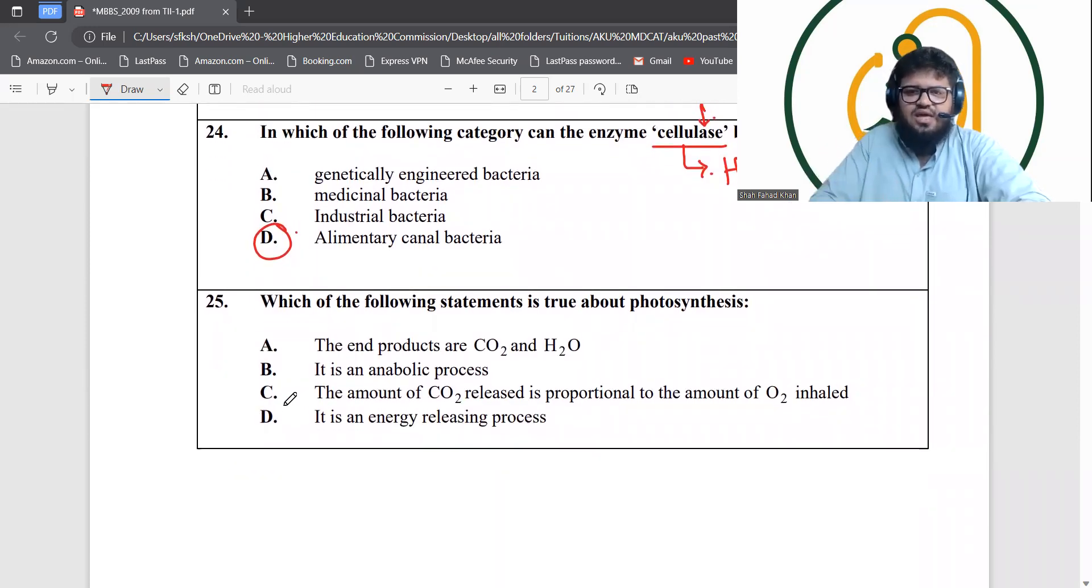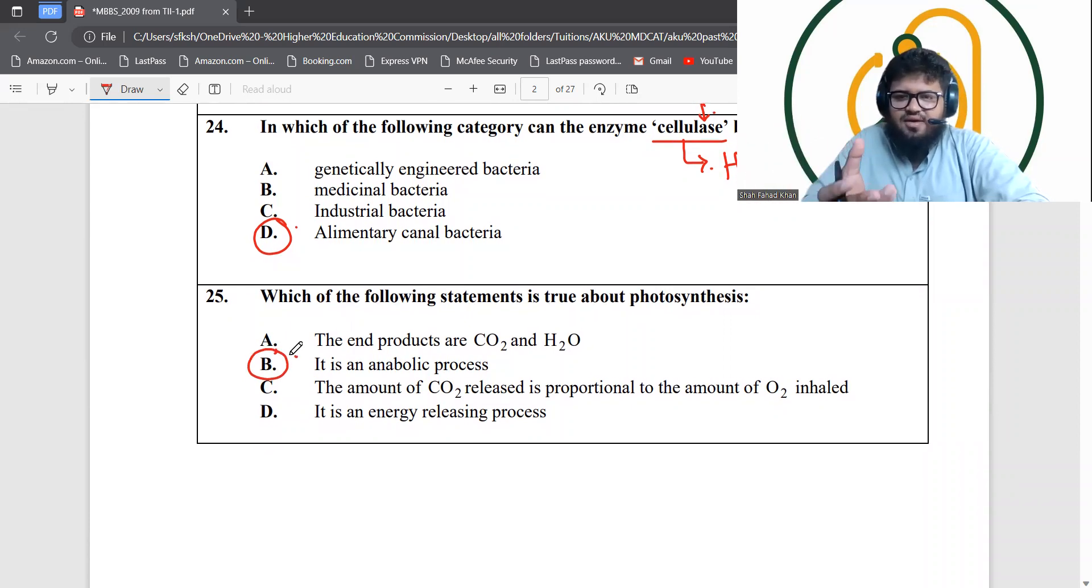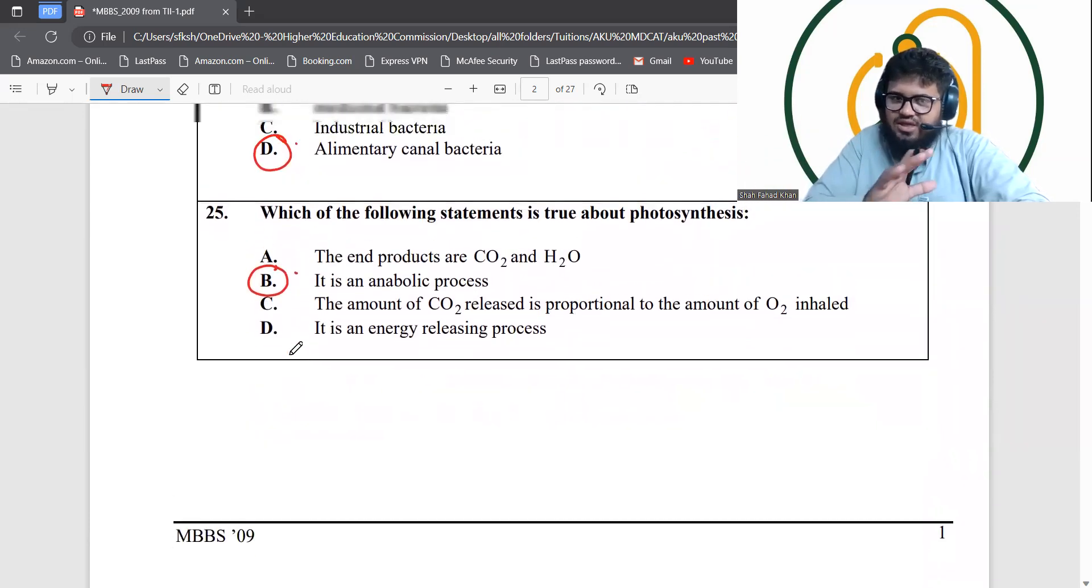Which of the following statements is true about photosynthesis? Photosynthesis is actually an anabolic process. It combines carbon dioxide and water to form glucose. Glucose is a bigger molecule formed by smaller molecules, so therefore it's anabolic. That's the only answer.